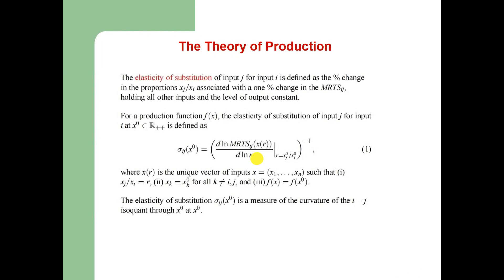The elasticity of substitution between two goods in consumption is analogous to the elasticity of substitution of two inputs. In case of more than two inputs, the elasticity of substitution of input j for input i is defined as the percentage change in the proportion of the two inputs associated with a one-percent change in the marginal rate of technical substitution between inputs i and j, holding all other inputs and the output level constant. This means we only change the proportion of the two inputs while keeping all others and the output level fixed.